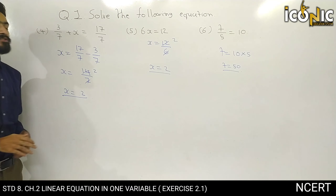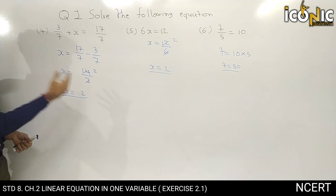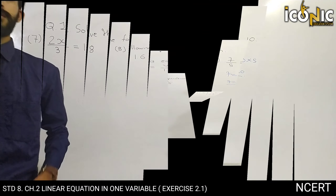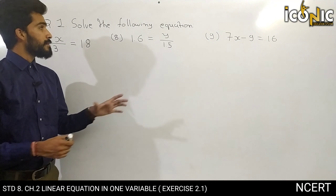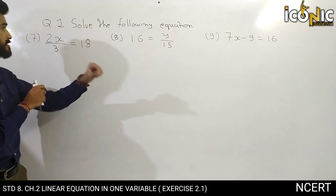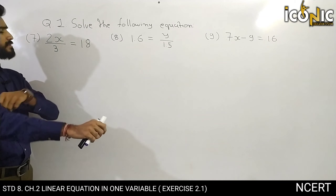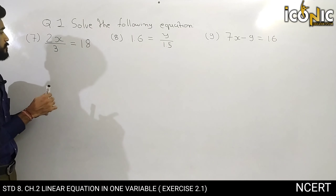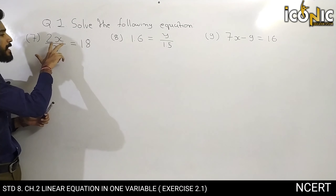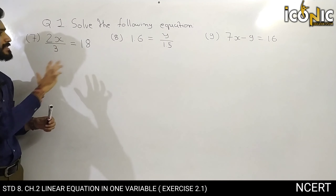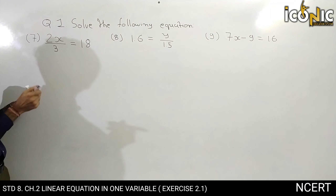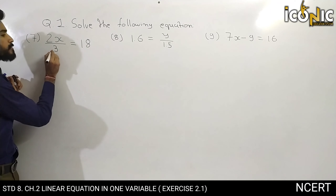This is question number 6 and we are going to our next example. Hello students, this is the seventh example, in which we have 2x by 3 is equal to 18.